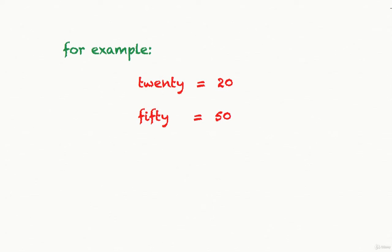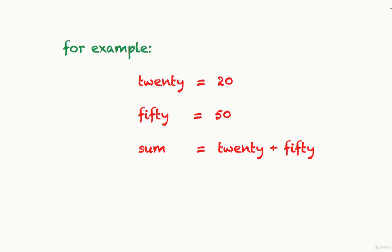Similarly, here we have created a variable named fifty and assigned the number 50 to it. We can use these variables in expressions. So now instead of writing numbers in an expression, I can use variable names. Here in this example, I have created a variable sum and stored the result of expression twenty plus fifty in it. So now the sum variable will contain the number 70, as it is the result when we add 20 and 50.